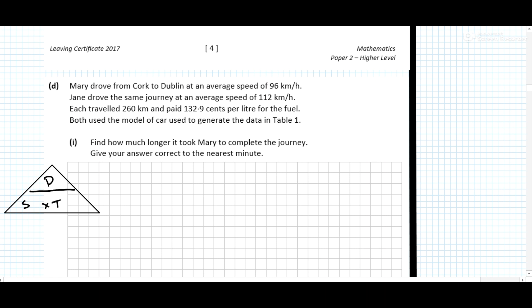What do we want to find? We want to find time. So we know that's distance over speed. So 260 divided by 96 for Mary. And 260 divided by 112 for Jane. 260 divided by 96 is 2.708 recurring. And 260 divided by 112 is 2.3214285714.